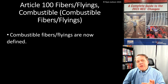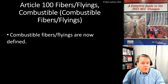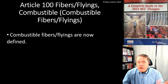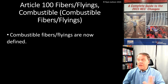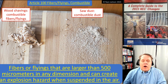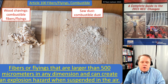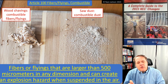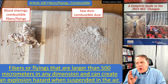Article 503 Class 3 locations are for ignitable or combustible fibers and flyings. Previously, the NEC never defined that term, which was patently ridiculous — but now we do have definitions. A combustible fiber or flying is a fiber or flying larger than 500 micrometers in any dimension that can create an explosion hazard when suspended in the air.